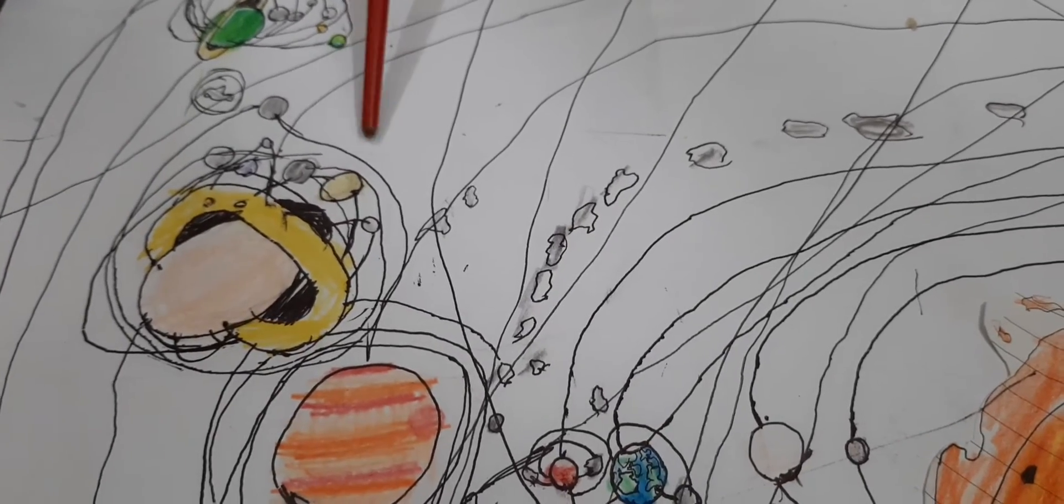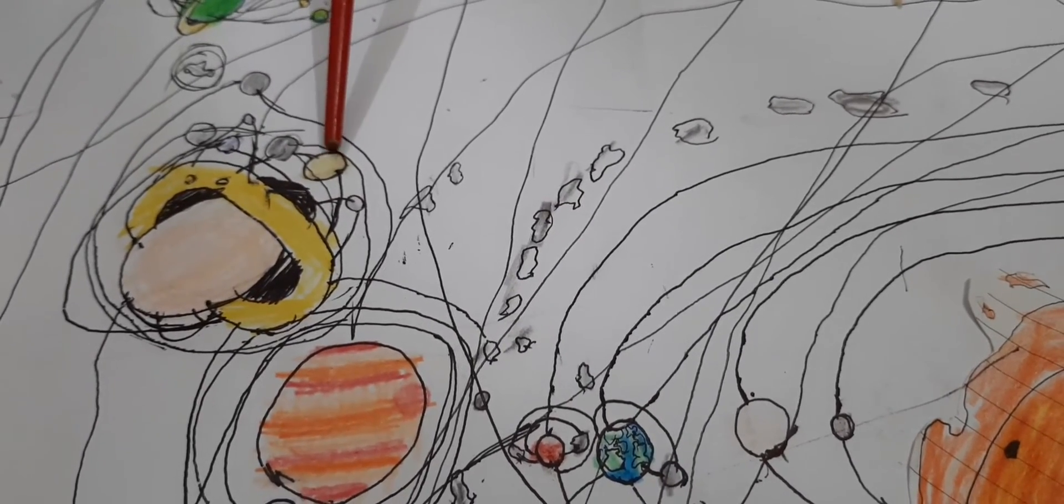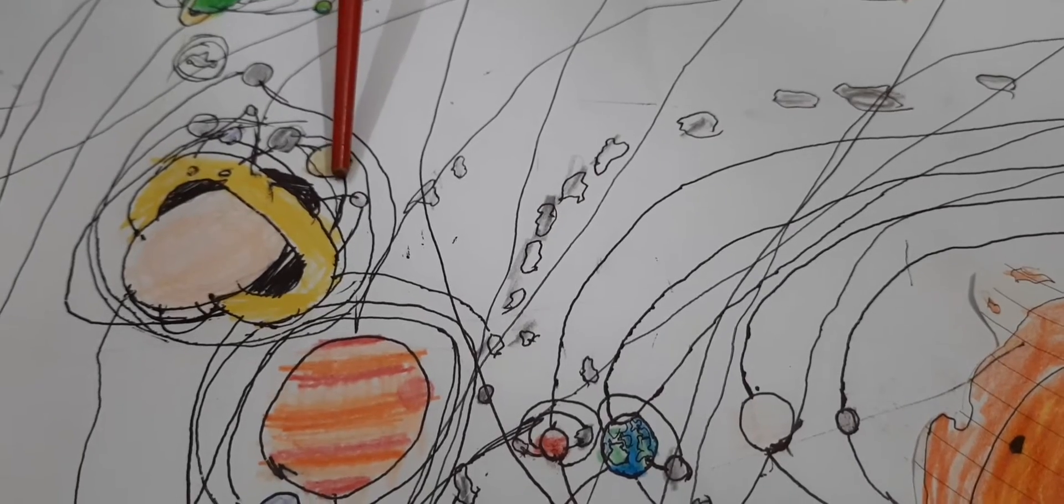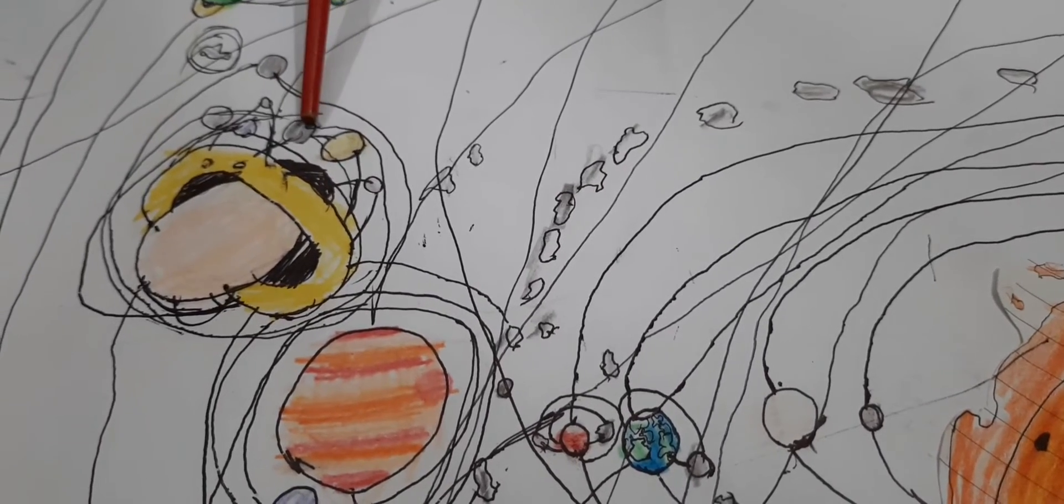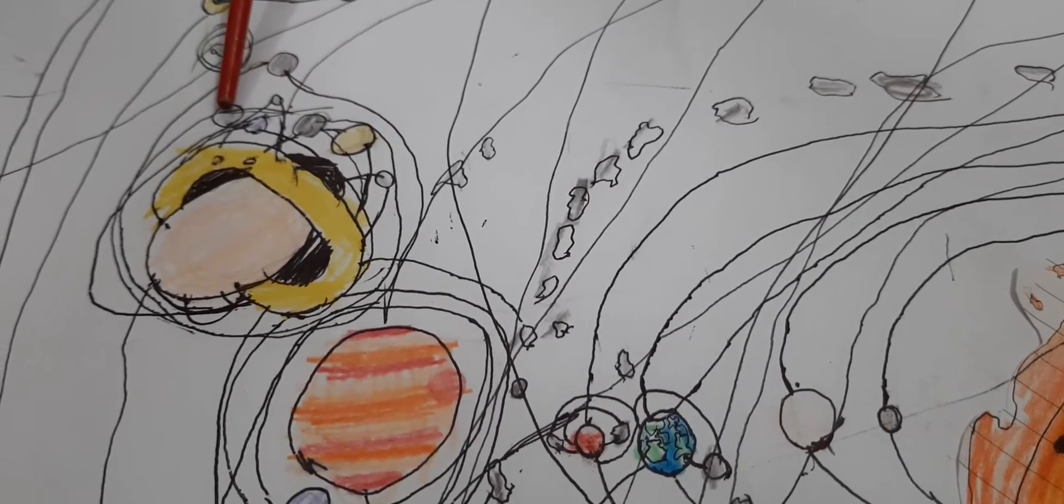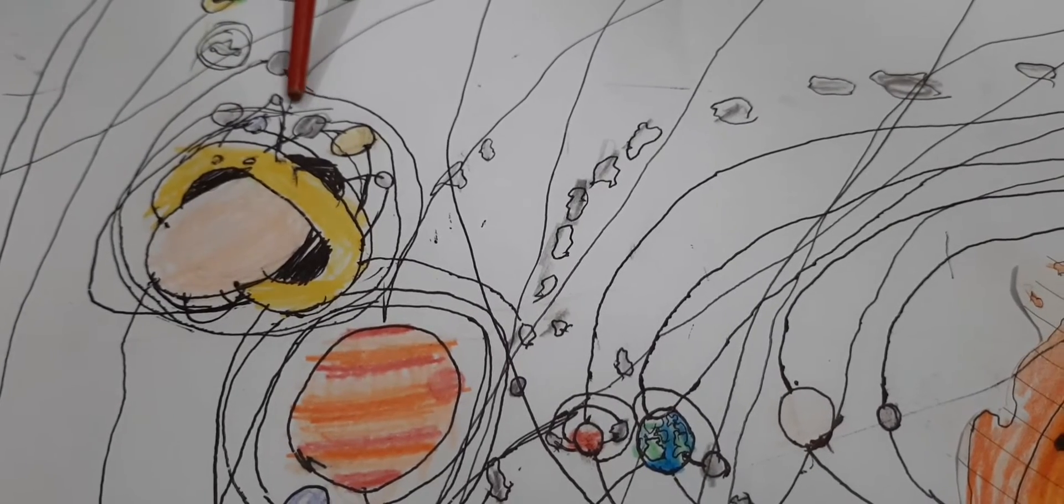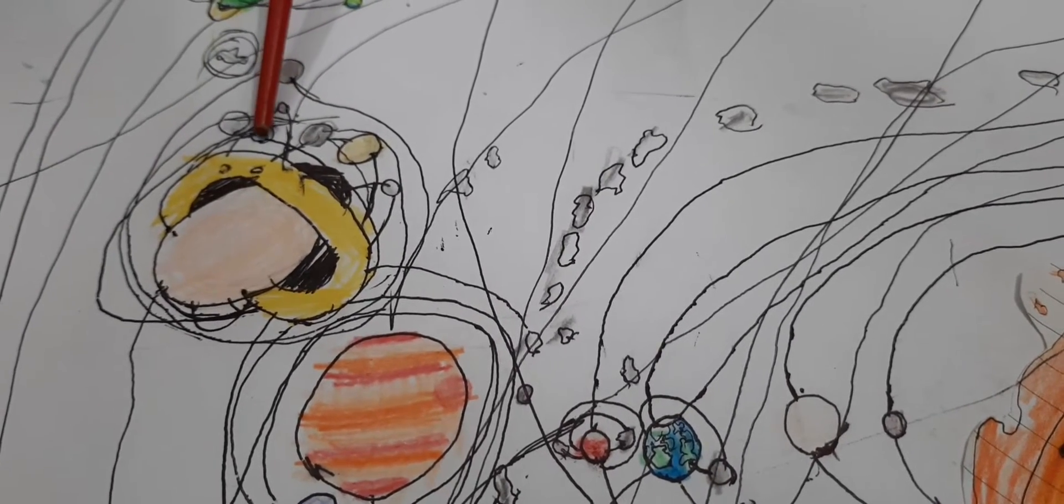This is Titan, the biggest moon of Saturn. This is Iapetus. This is Rhea. This is Dione. This is Tethys. And Enceladus. And this is Mimas.